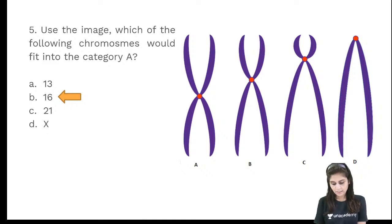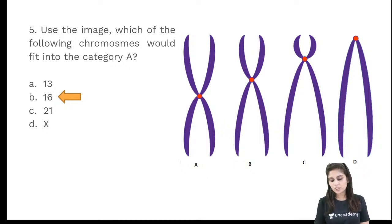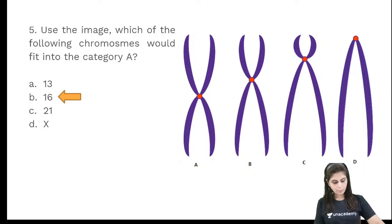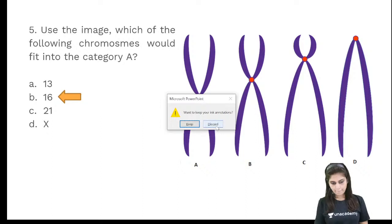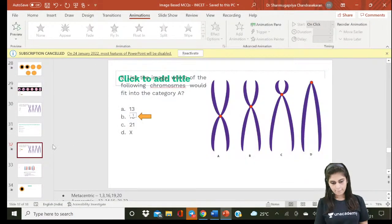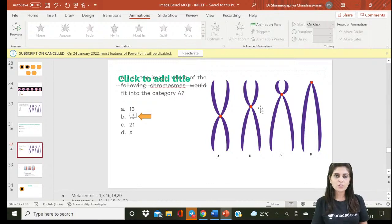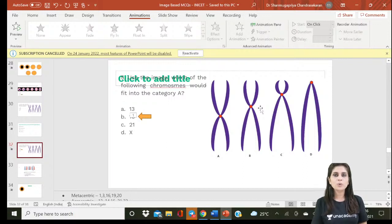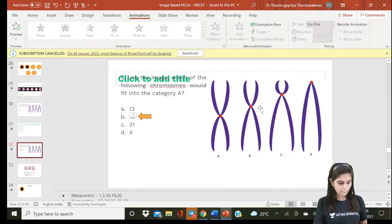Thank you all for joining. We'll see you tomorrow with a mixed-bag MCQ session covering metabolic pathways. Also, at 9 o'clock there is a special class continuing on euchromatin and heterochromatin — covering methylation of cytidine residues, heteroplasmy, phenotypic heterogeneity, and allelic heterogeneity. Good night.